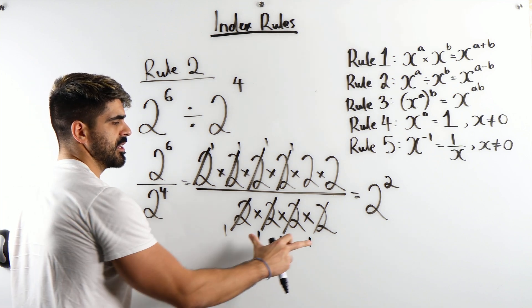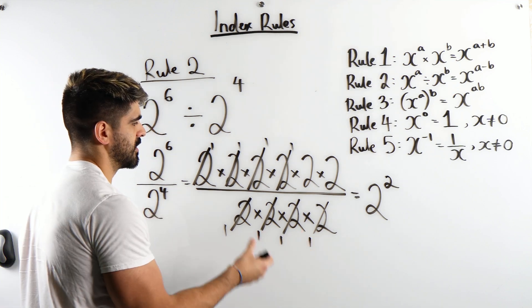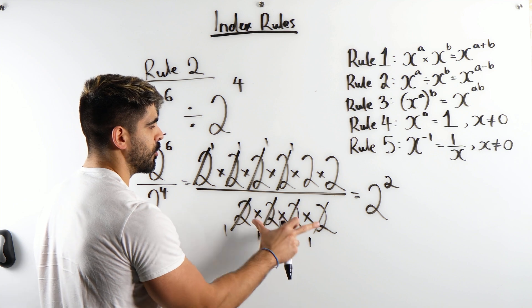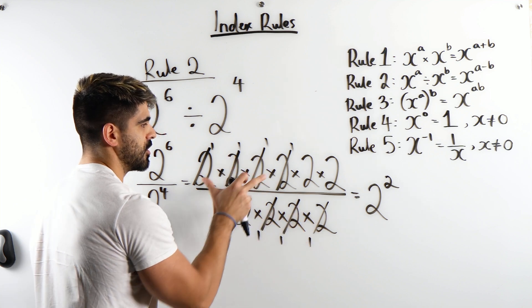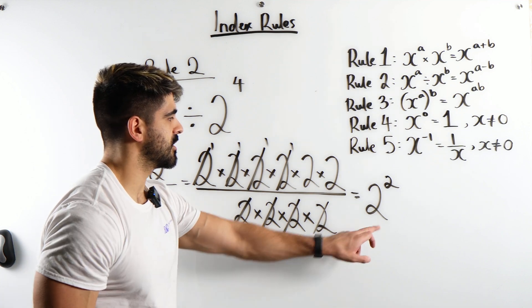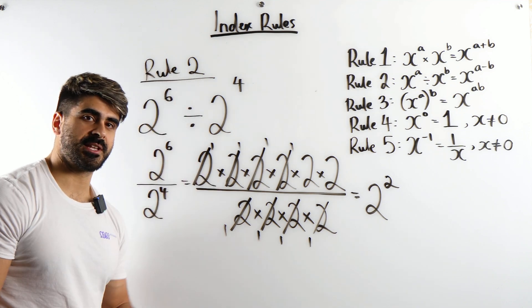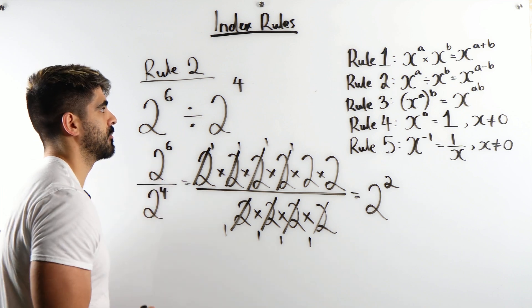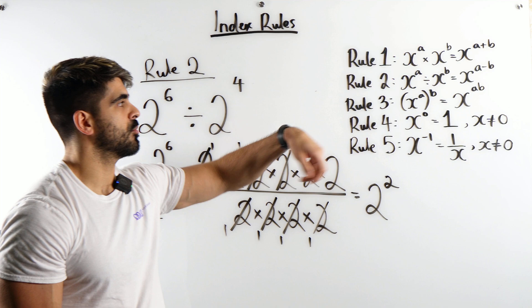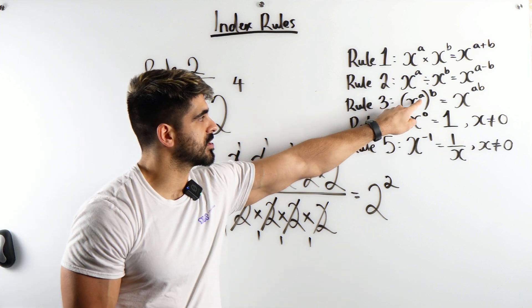What we're left with is 2 times 2 which is 2 squared which is the subtraction of these two values. So the way this simplifies is you're basically looking at the lowest power and you can see that the lowest power will always cancel with the same amount from the largest power. So this is why when we divide numbers with the same base, we subtract the powers.